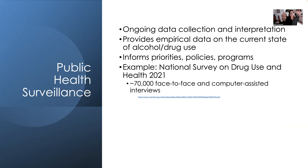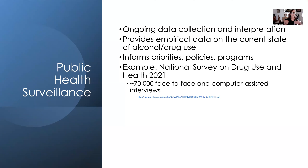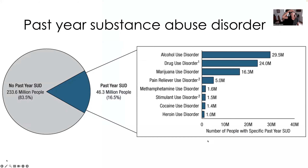One of the important things public health does is ongoing data collection and interpretation — public health surveillance. They surveil what's happening in the United States, providing empirical data on the current state of alcohol and drug use to inform priorities, policies, and programs. For example, findings come from the National Survey on Drug Use and Health from 2021, which conducted about 70,000 face-to-face interviews with a representative sample of the US population. They also use computer-assisted interviews for sensitive questions.